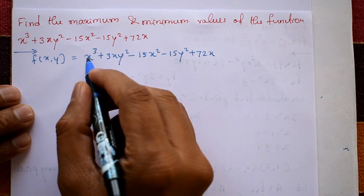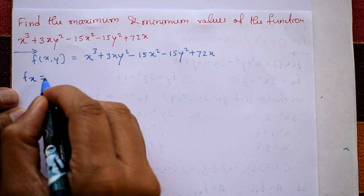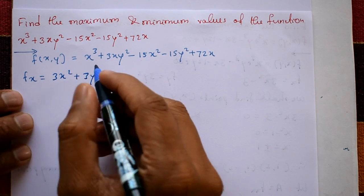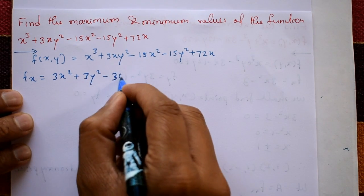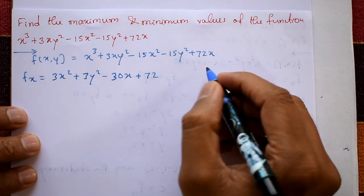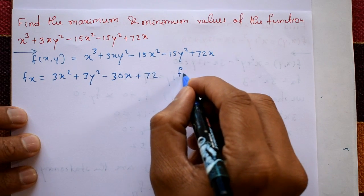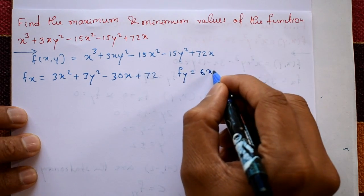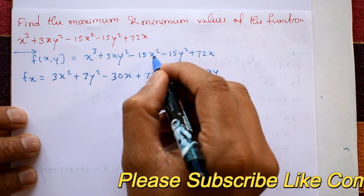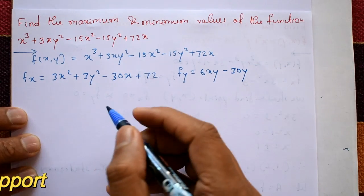Differentiate this function with respect to x partially: dou f by dou x = 3x² + 3y² - 30x + 72. Then differentiate with respect to y partially: dou f by dou y = 6xy - 30y.